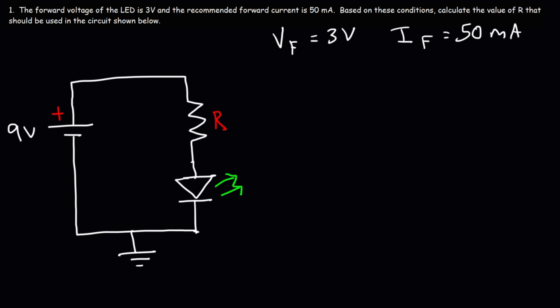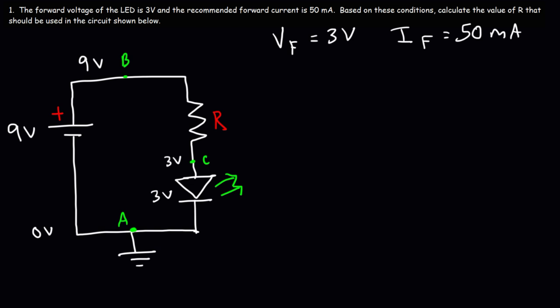Let's write down the potentials. We'll call this point A, point B, and point C. The potential at point A is 0 because that's the ground. Point B is going to be 9 volts based on the battery. Now, the forward voltage of the LED is 3 volts, so point C is at 3 volts.